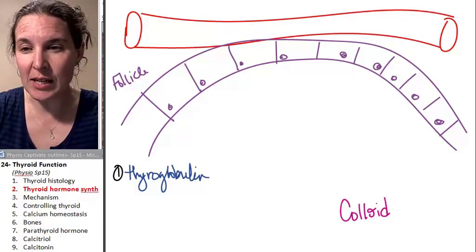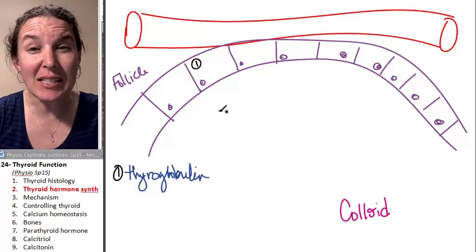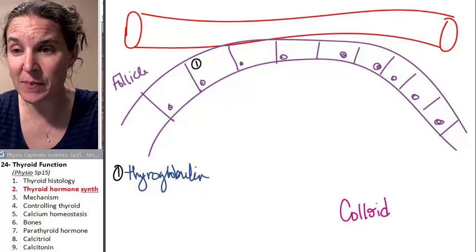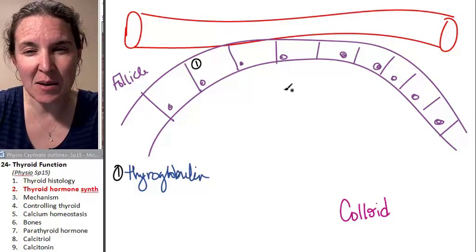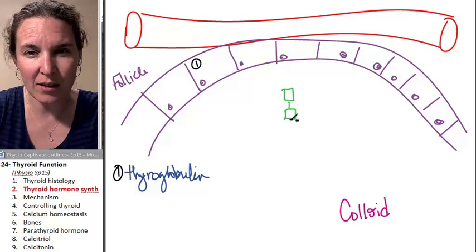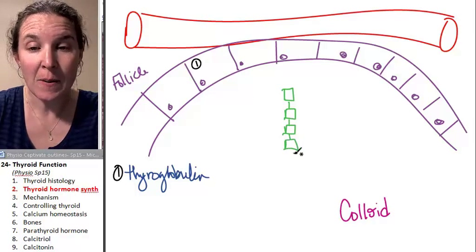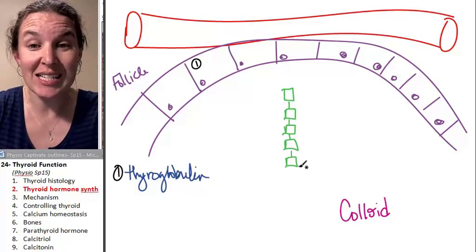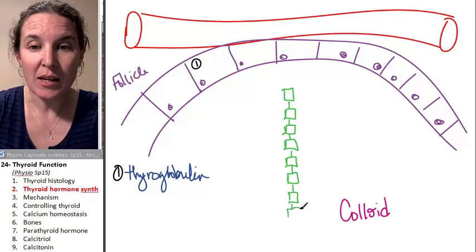So thyroglobulin is produced inside the cells. And basically, I'm going to draw you a picture of it, because essentially thyroglobulin is the amino acid tyrosine. I don't know if you remember that thyroid hormone is an amino acid derivative. And essentially thyroglobulin is 70 tyrosine molecules, and tyrosine is just an amino acid in sequence.